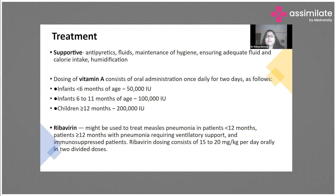Vitamin A is another very important treatment to give children presenting with measles, because complications like keratitis and corneal ulceration can occur, and vitamin A deficiency contributes to these. It is also part of the immunization schedule. The dosage is once daily for two days: for infants less than six months it is 50,000 units; for infants up to 12 months it is 1 lakh units; and for children above 12 months it is 2 lakh units as a stat dose. For children with signs of vitamin A deficiency, a third dose should be repeated four to five weeks after the second dose.